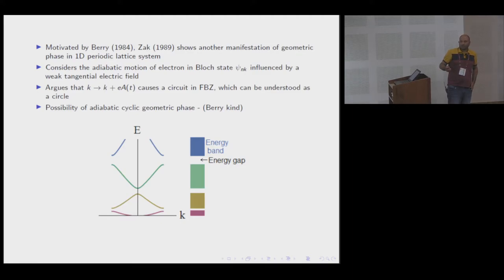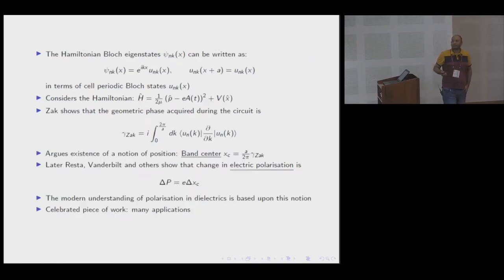Because of the nature of energy dispersion, he anticipated this is a cyclic adiabatic geometric phase. In terms of cell periodic Bloch states, if psi's are our usual Bloch states, they can be decomposed into cell periodic Bloch states which have periodicity over the cell. This object is a cell periodic object.